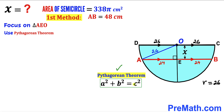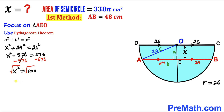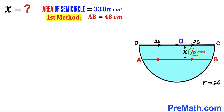Applying the Pythagorean theorem: a² + b² = c², where x is one leg, 24 is the other leg, and 26 is the hypotenuse. So x² + 24² = 26², which gives x² + 576 = 676. Subtracting 576 from both sides: x² = 100. Taking the square root, x = 10 cm. So the distance x is 10 cm.